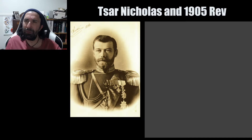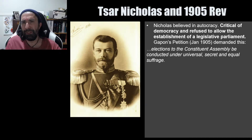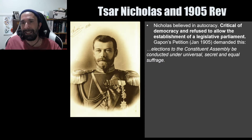Perhaps his most significant contribution was his attitude towards what sort of political system Russian society should have. He was an autocrat — he believed in autocracy and was very critical of democracy. He refused to allow the establishment of a legislative parliament, an attitude he inherited from his father Tsar Alexander the Third, who had instituted a number of repressive policies.